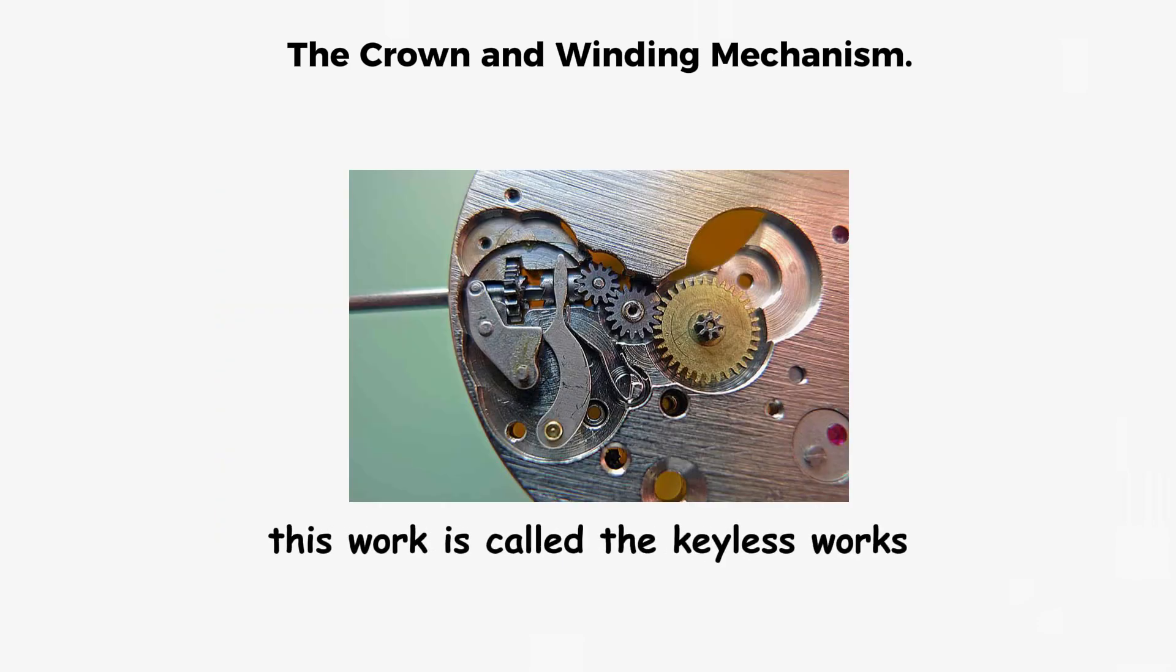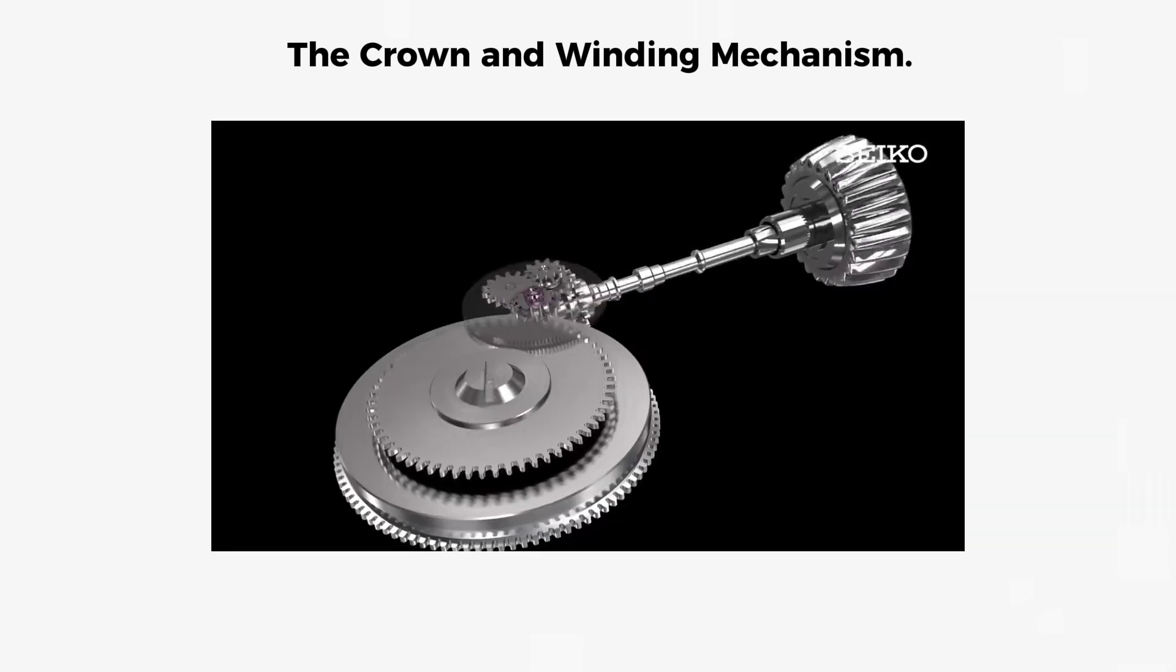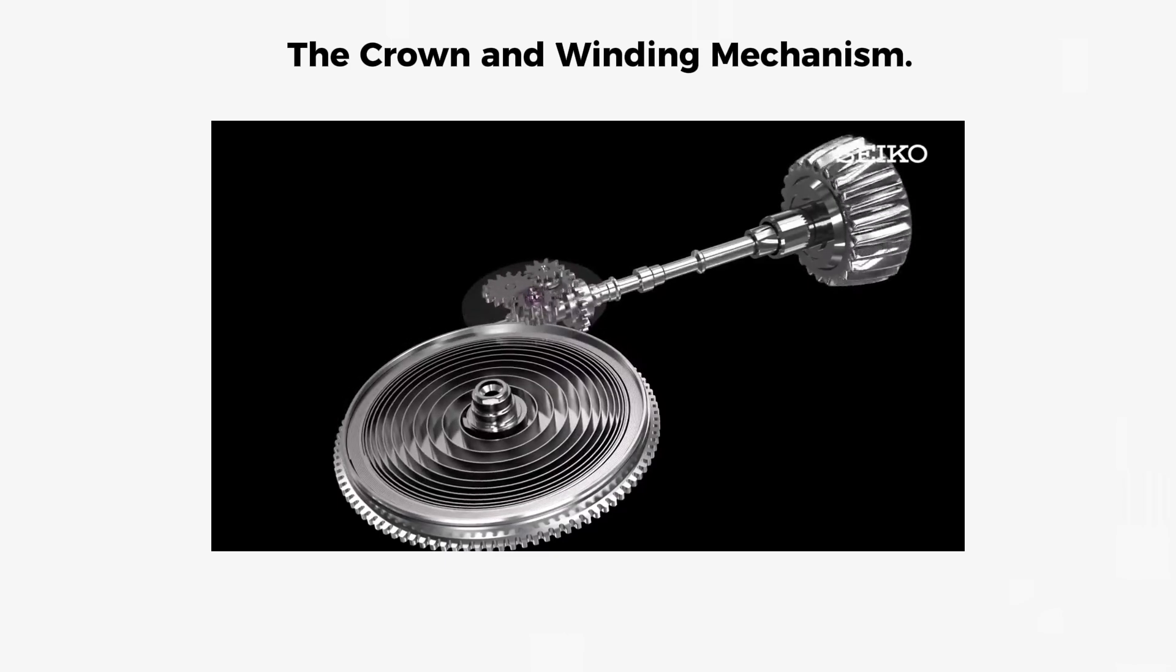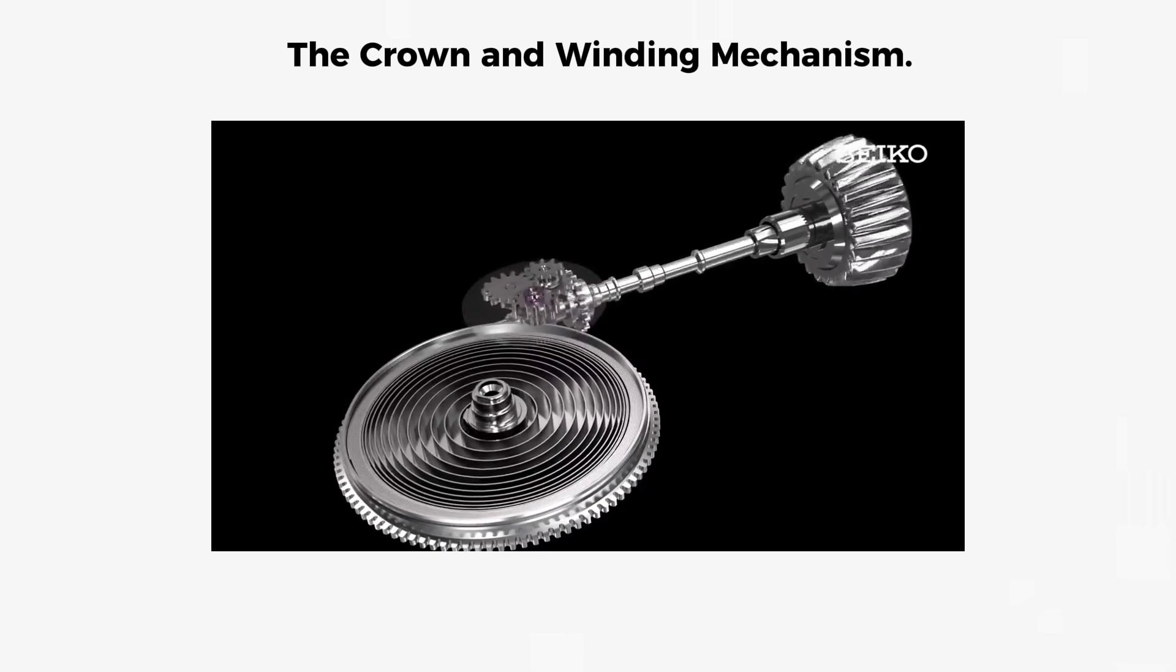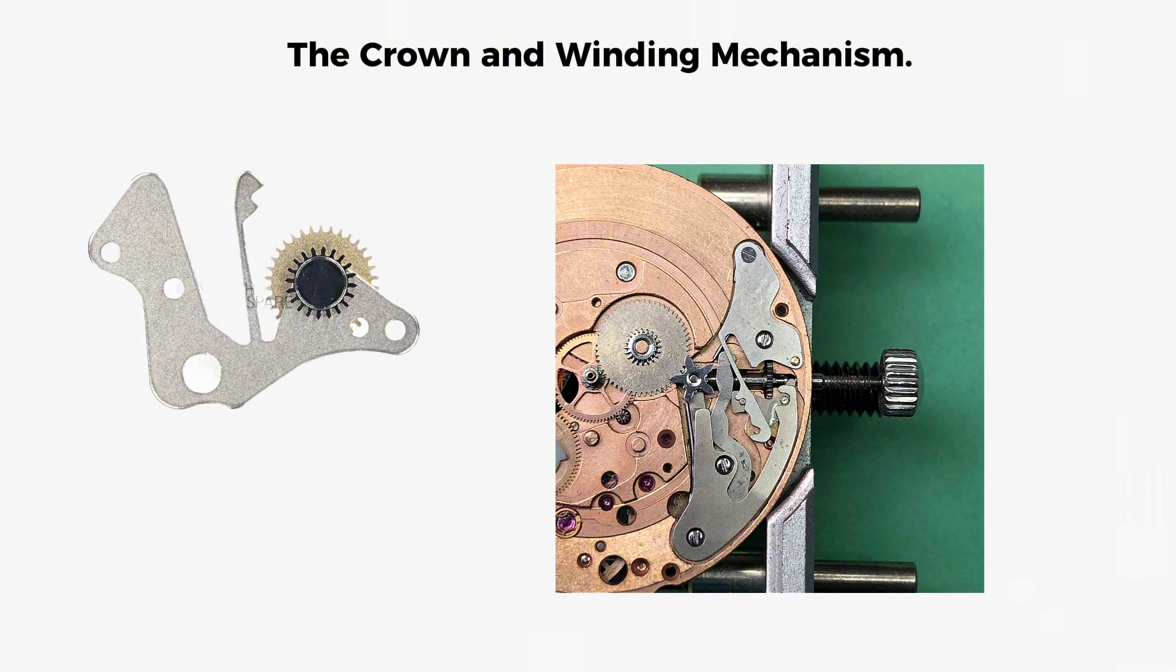The mechanism that makes this work is called the keyless works, a series of gears connected to the crown stem that change function depending on the crown position. The setting jumper is a spring-loaded component with two indents that lock the crown mechanism in place for each mode.